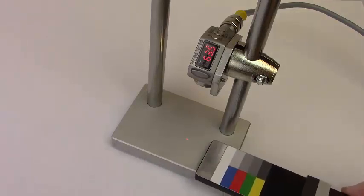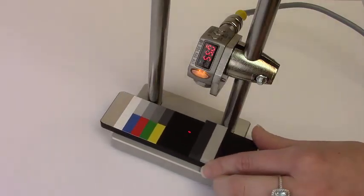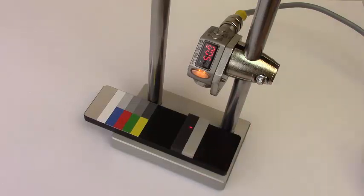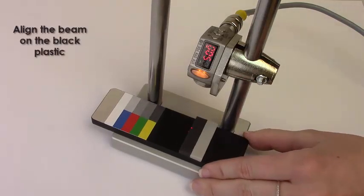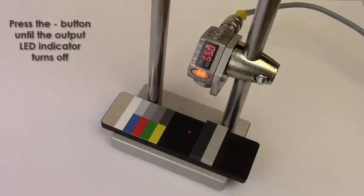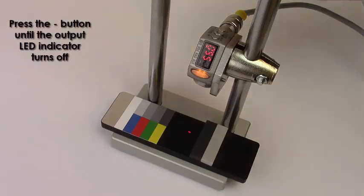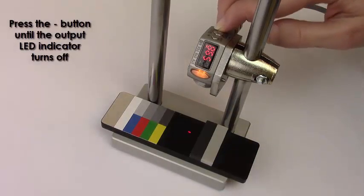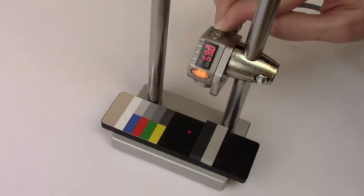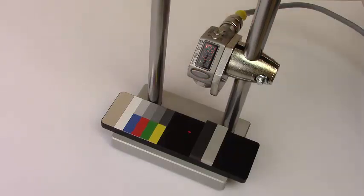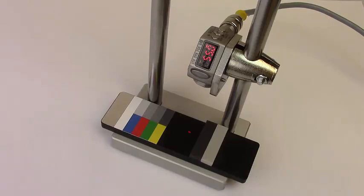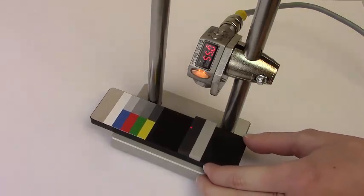The sensor detects any part of the target, but not the aluminum base. Now align the beam on the black plastic. Press the minus button until the output LED indicator turns off. The sensor is now off for the base and target piece, but on for the foam.